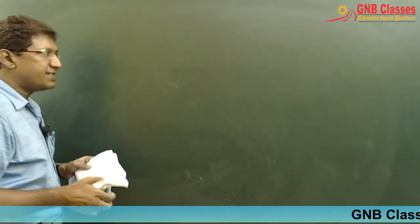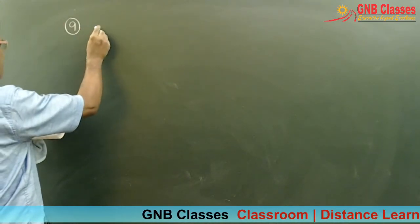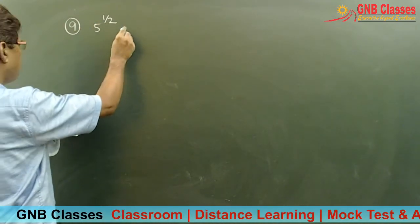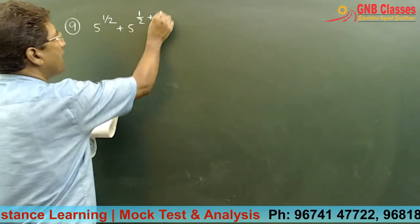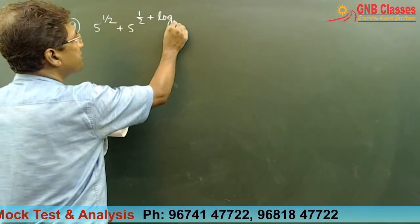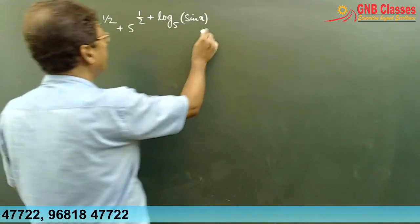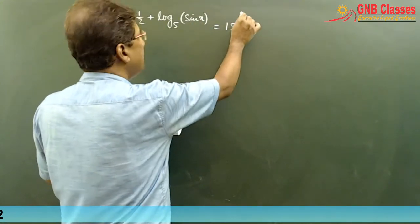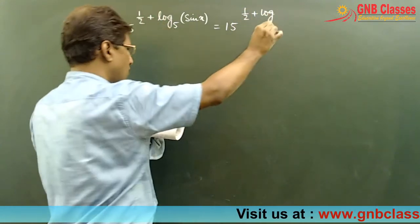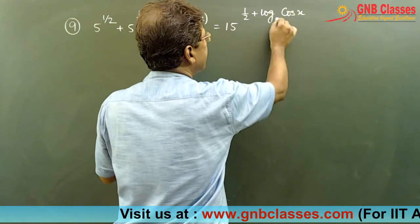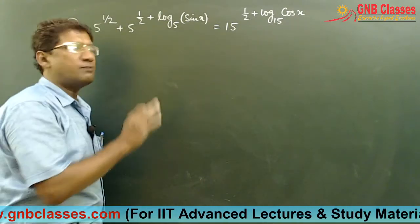Write down and solve the equation: 5 to the power half plus 5 to the power half plus log base φ of sin x equals 15 to the power half plus log cos x base 15.